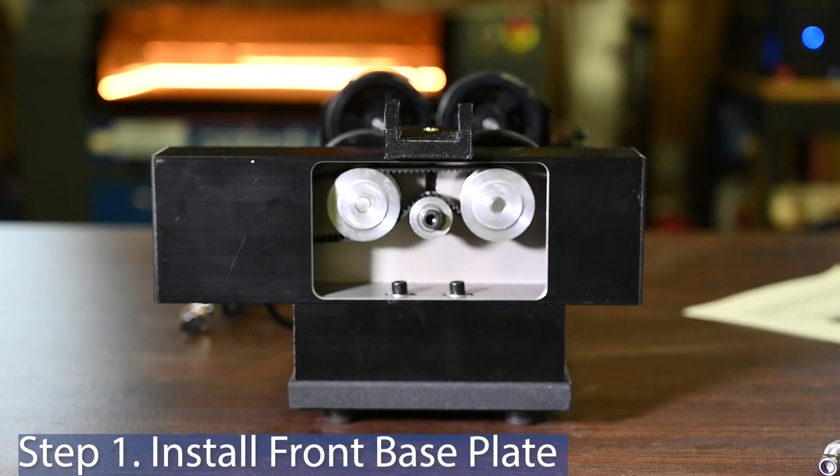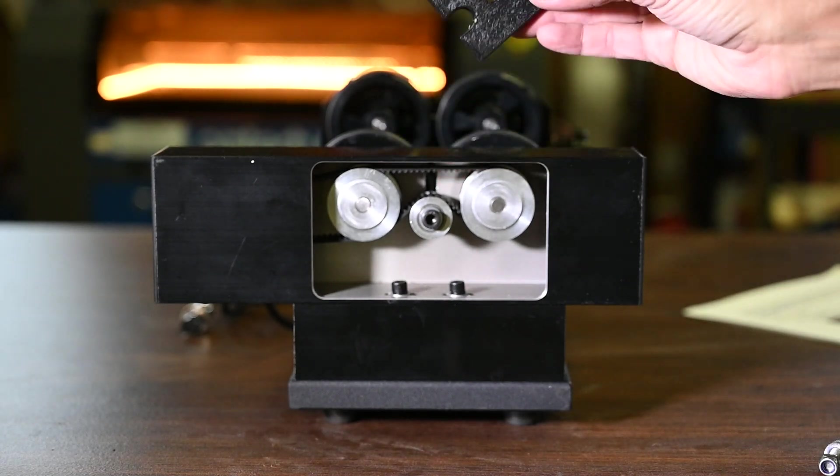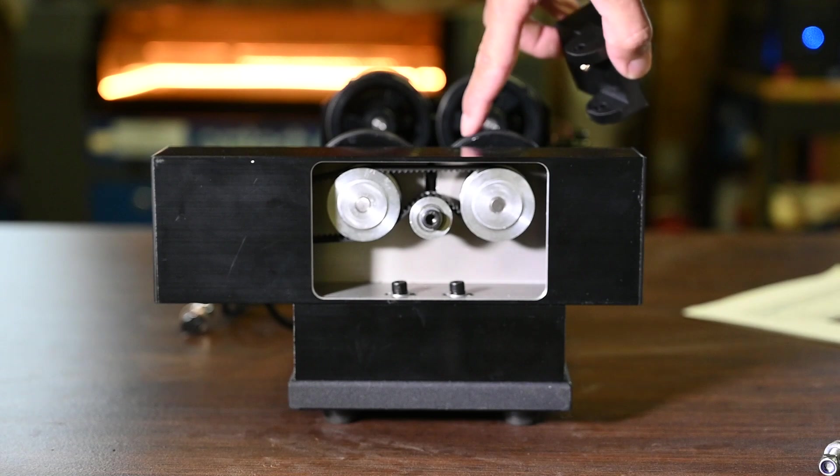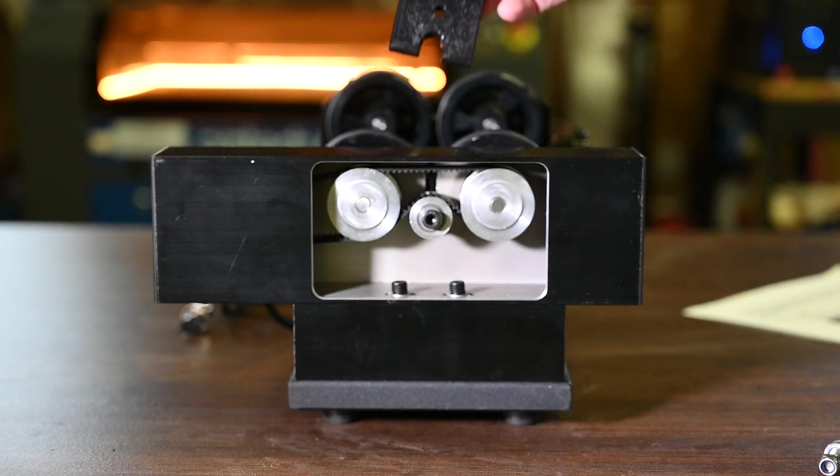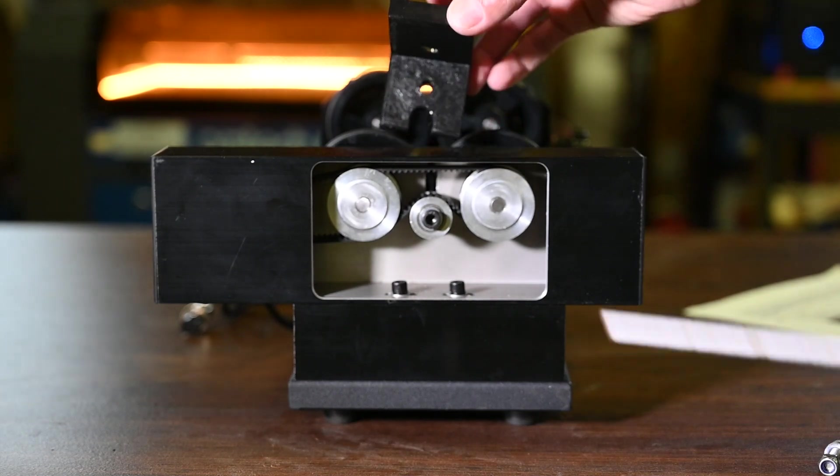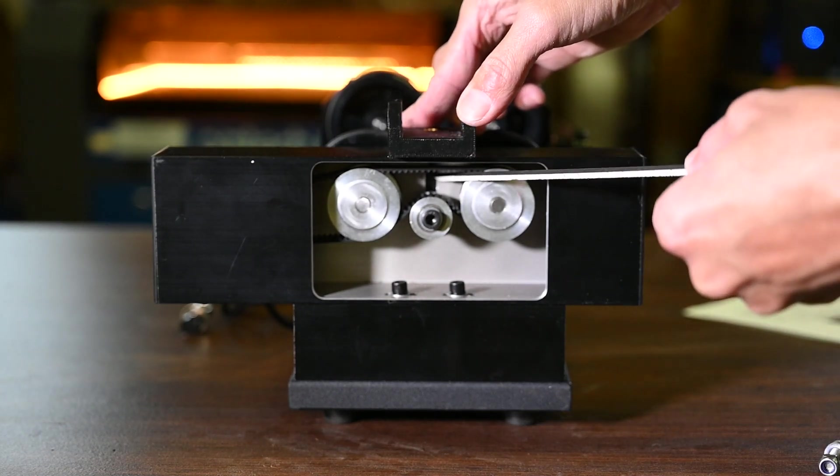Step one, front base plate assembly. The front base plate simply sits here in between the two front drive wheels. This notch is going to fit over the bolt here in the front and then you will see that this hole is going to line up with this slot.